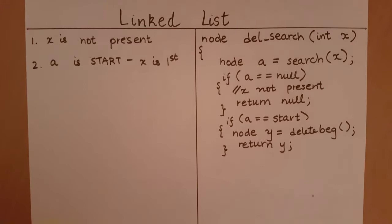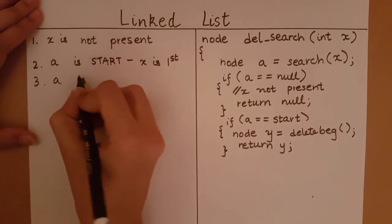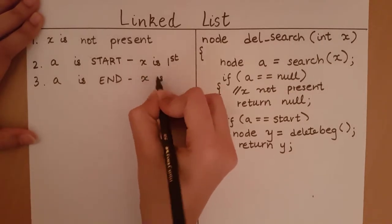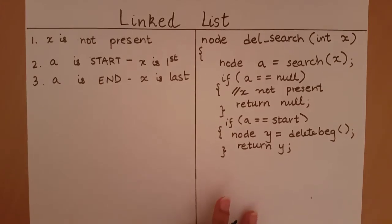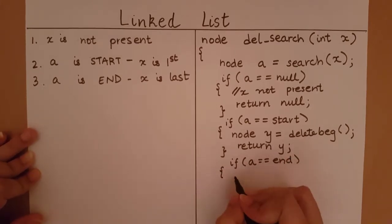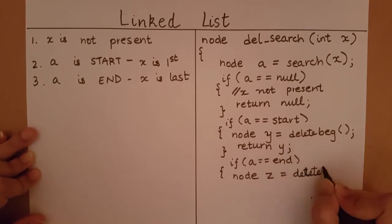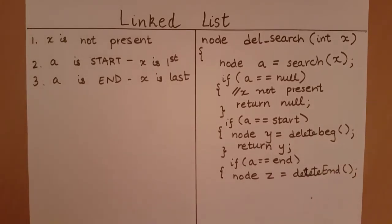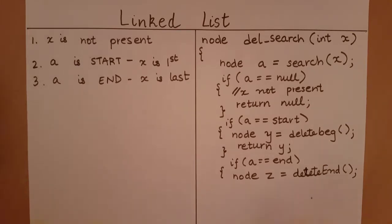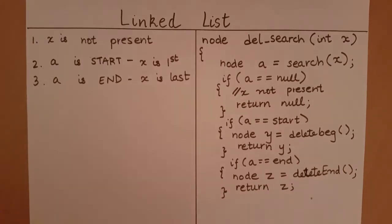The next case is when a is the last element — that is, x is the last element. In such a case we can call the delete-from-end function because we are trying to delete an element from the end. If a equals end, we delete from the end, store the result in node z, and return the node which we have deleted.